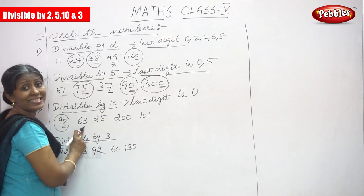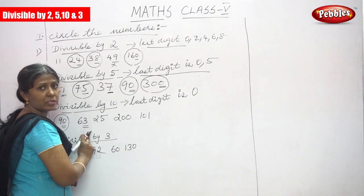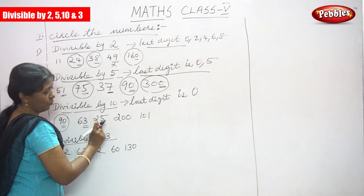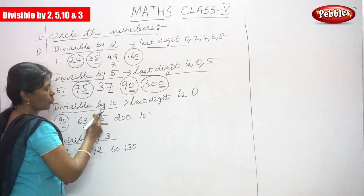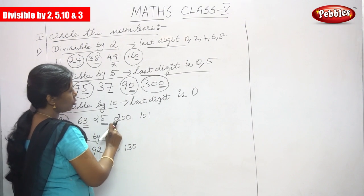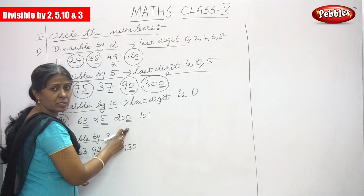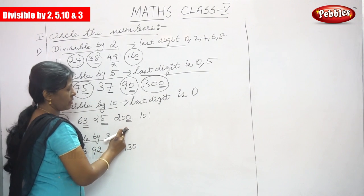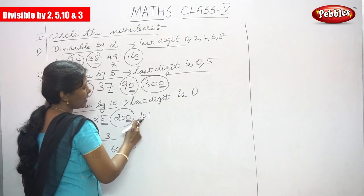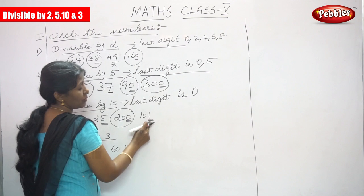Circle the number. Next is 63 — the last digit is 3, so it does not end with 0, so it is not divisible by 10. Next, 25 — the last digit is 5, so it is not divisible by 10. Next is 200 — the last digit is 0, so it is divisible by 10. Circle the number. Next, 101 — the last digit is 1, so it is not divisible by 10.